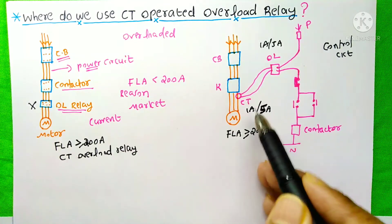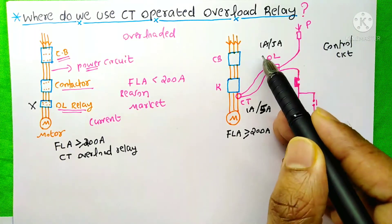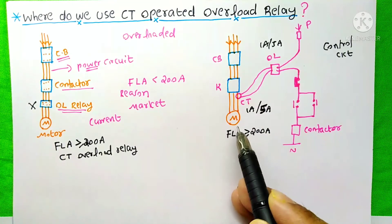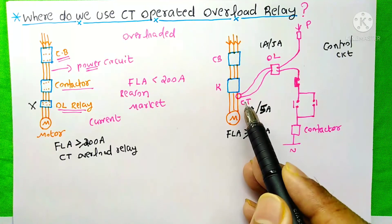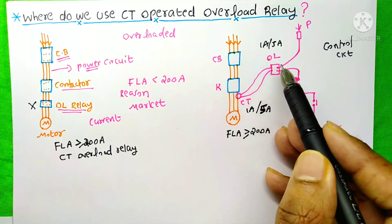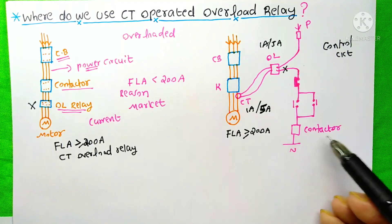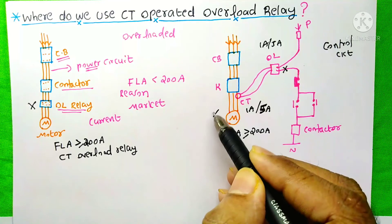But here, this overload relay's capacity only depends upon this CT's secondary current. If this motor consumes more current than its rating, then this CT sends signal to the overload relay and this overload relay trips. And this contactor will not get the power and the power to this motor will be cut off.